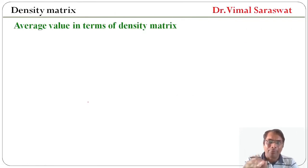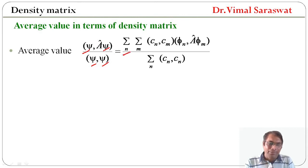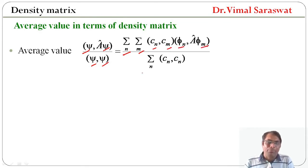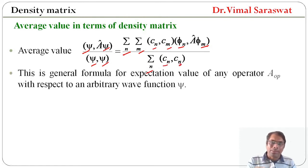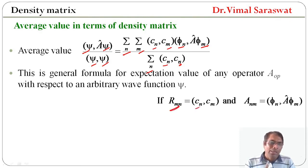Now the average value in terms of density matrix: <psi | A | psi> divided by <psi | psi> equals sigma_n sigma_m c_n* c_m <phi_n | A | phi_m> divided by sigma_n c_n* c_n. This is the general formula for the expectation value of any operator A with respect to an arbitrary wave function psi. If r_mn equal to c_n* c_m and A_nm equal to <phi_n | A | phi_m>.